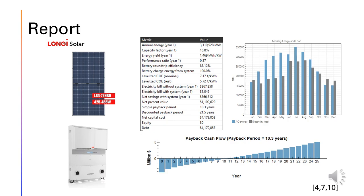From our simulations, we determined that the optimal configuration will be using the Longhi bifacial panels and the 208V ABB inverters. SAM provided us with a report of all the important metrics from our simulation. The LCOE of our proposed system is 7.71 cents per kilowatt hour, while the payback period is 10.3 years. We also used the graphs to ensure the generator power was sufficient for the electricity loads of the Bergeron.